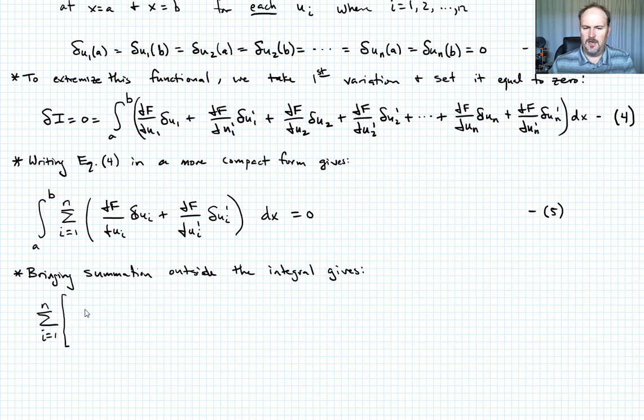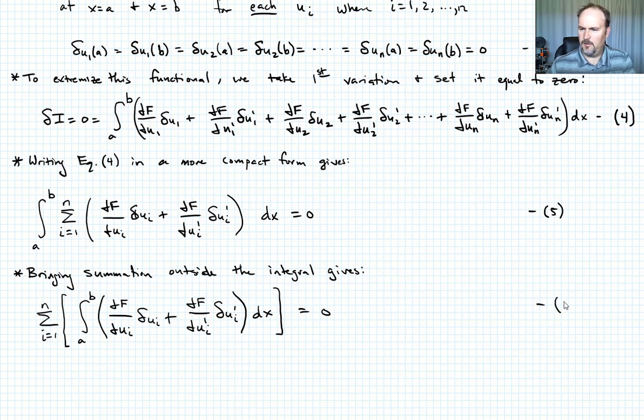When I do that, I end up with the sum from i equals one to n of, I'll put it in brackets here, now the quantity integral from a to b of partial of f with respect to ui times delta ui plus partial of f with respect to ui prime delta ui prime, dx, close brackets, is equal to zero. Call that equation six.